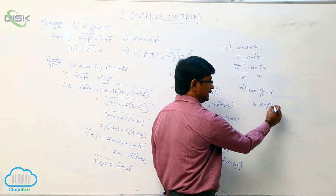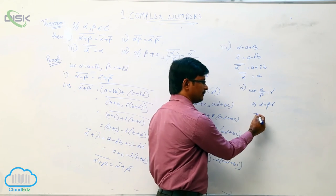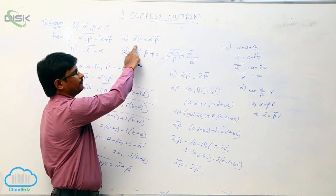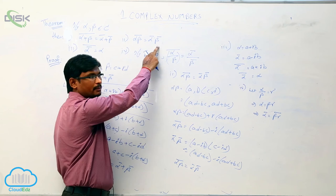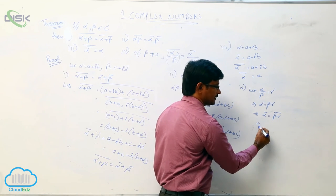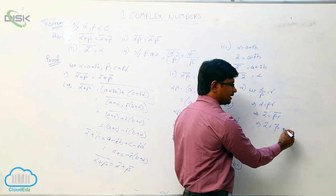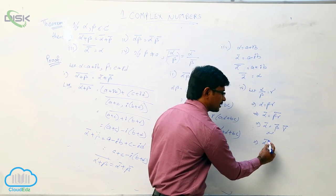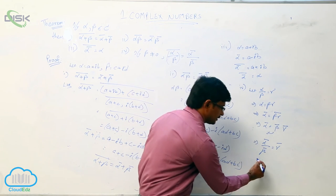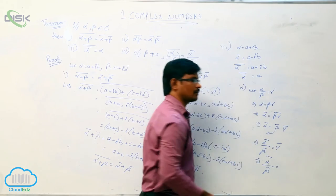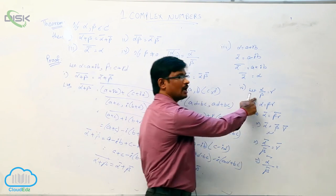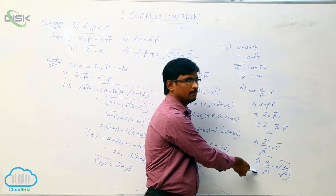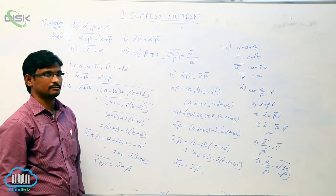Cross multiplying: alpha equals beta times gamma. Applying the conjugate on both sides, and using the second property — that the conjugate of beta times gamma equals beta conjugate times gamma conjugate — we get alpha conjugate equals beta conjugate times gamma conjugate. Shifting beta conjugate to the other side: alpha conjugate divided by beta conjugate equals gamma conjugate. Since gamma is alpha divided by beta, this means the conjugate of alpha divided by beta equals alpha conjugate divided by beta conjugate. These are the properties of the conjugate of complex numbers.